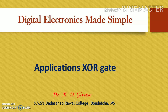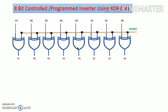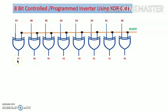XOR gate has applications as a controlled inverter, bit comparator, parity generator, and parity checker. Let us see the 8-bit controlled or programmable inverter using XOR gate. It is 8-bit, so 8 XOR gates are used. The inverter controlled input is applied to one input of each XOR gate. It is an active high input, and the data input from D0 to D7 is applied to the other input of the XOR gate. Here we get Y0 to Y7 outputs.